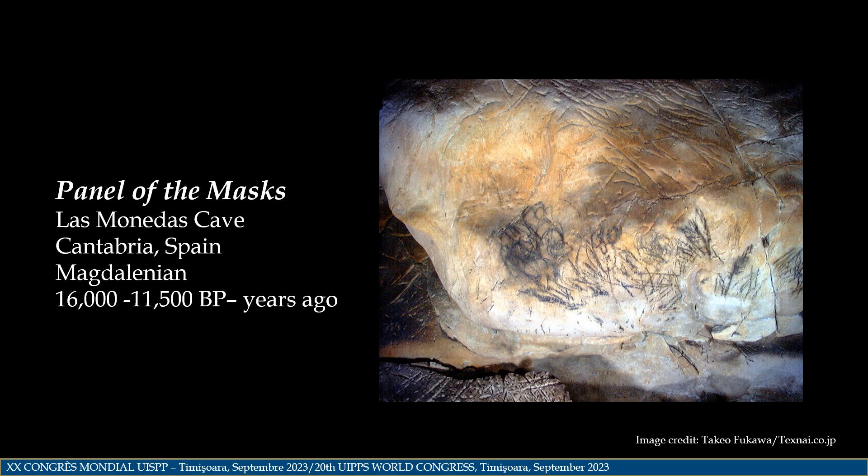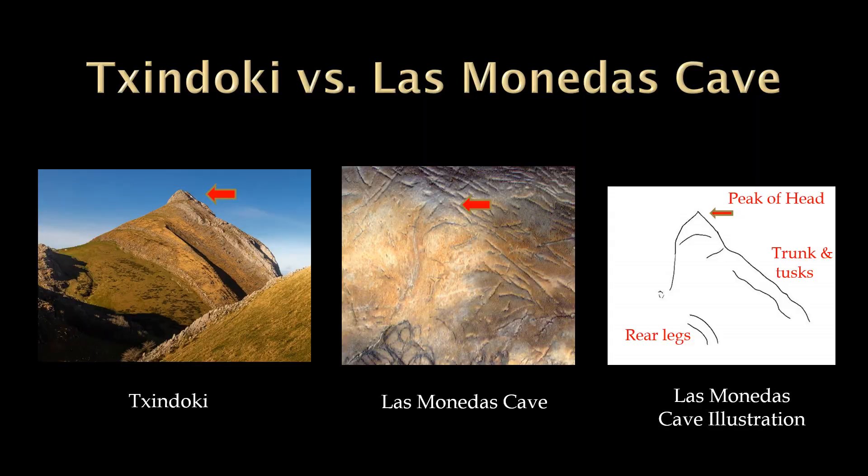Our travels take us to Cantabria, within the Las Monedas Cave, where we can view the panel of the masks from the same time period as the previously depicted El Pindal principal panel. On the panel of masks, we find the pareidolia elephant character visualized on Chindoki, as depicted at the previous El Pindal cave image. The peak of the elephant's head is marked by the red arrows.